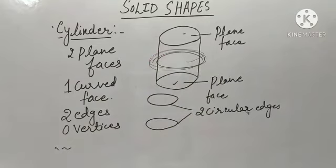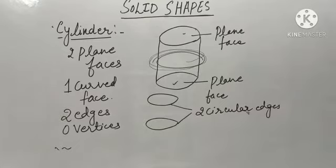Cylinder has two plane faces, one curved face, two edges and zero vertices. I hope you understood.